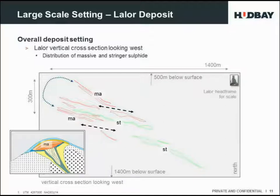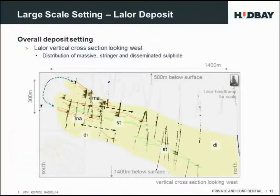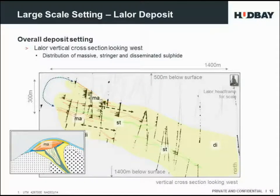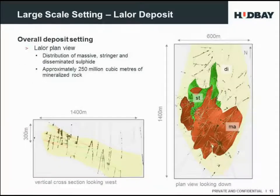This is the same section but adding drill holes with iron grades as histograms. The pale green and pale yellow colour is the disseminated mineralisation that would have occurred around the alteration pipe of the VMS deposit. In the third dimension — the plan view on the right — the red lenses represent massive sulphide, green is the Stringer zone, and the disseminated mineralisation surrounds that.